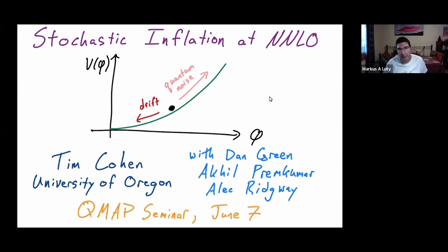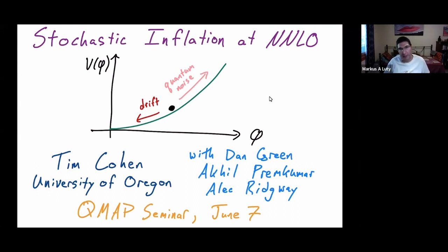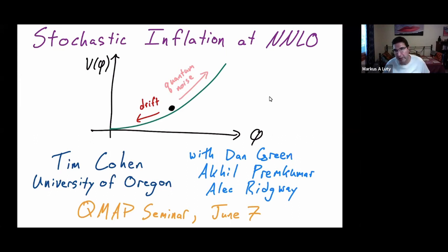We're very happy to have Tim Cohen, who's well known to all of us. Tim got his PhD at University of Michigan, went on to Stanford, and he's now at University of Oregon. He's a former non-UC Davis postdoc, but we love him anyway, and we're eager to hear what he has to say about stochastic inflation at NNLO.